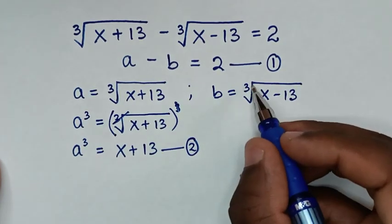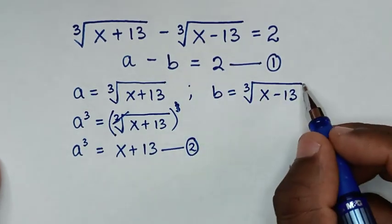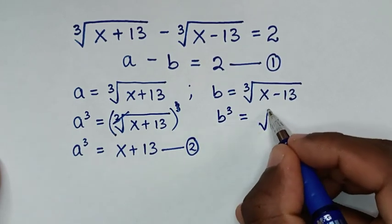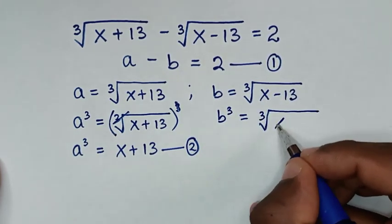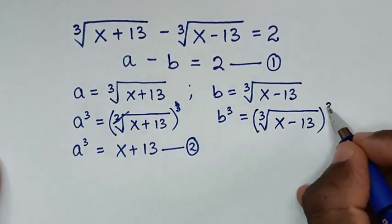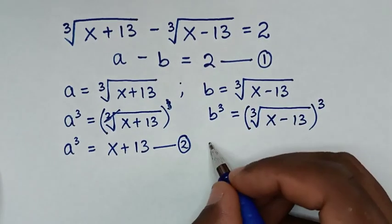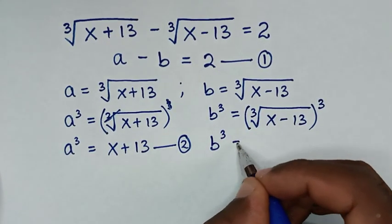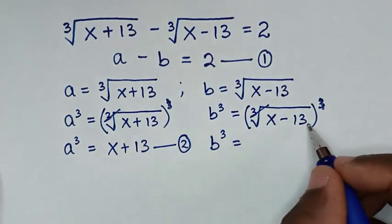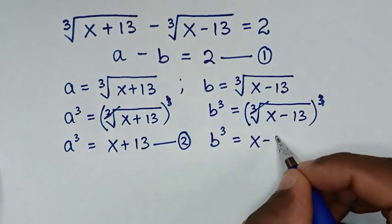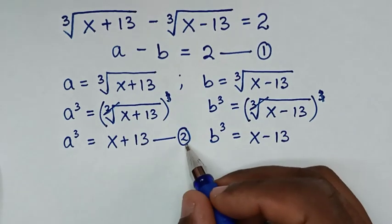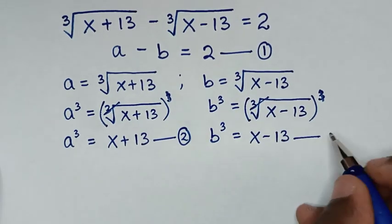Similarly, to remove the cube root on b, we power both sides by 3. So b³ equals cube root of (x - 13), and the cube root cancels the power 3, giving b³ equals x - 13. We call this equation 3.